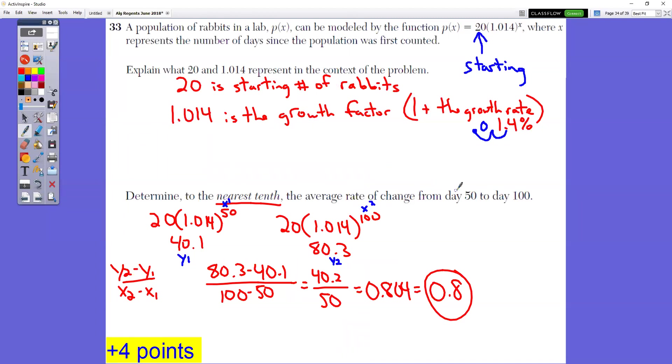Determine to the nearest tenth the average rate from day 50 to day 100. The second part is rather difficult. What you need to do is you need to sub in day 50 and day 100 into that formula. When you do that, you get 40.1 and you get 80.3. Now you need to use the slope formula. It asks for the average rate of change. The rate of change is your slope. So you want to use the formula Y2 minus Y1 over X2 minus X1. So your first point, X1, Y1 is 50 with the answer of 40.1, and then your X2, Y2 is 100, 80.3. So you sub those numbers into the formula, you get 40.2 over 50. When you subtract, divide top divided by bottom, you get this. They want you to round to the nearest tenth, so it would be 0.8. The second part, very difficult.